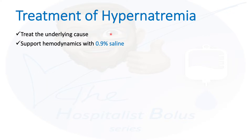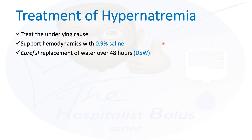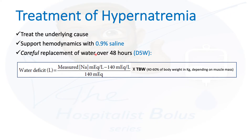Volume is a priority, and then the definitive treatment of dehydration is to put the water back — basically water replacement, done slowly over at least two days. The fluid we usually use is D5W, and the amount you need to give can be calculated by one of two equations.